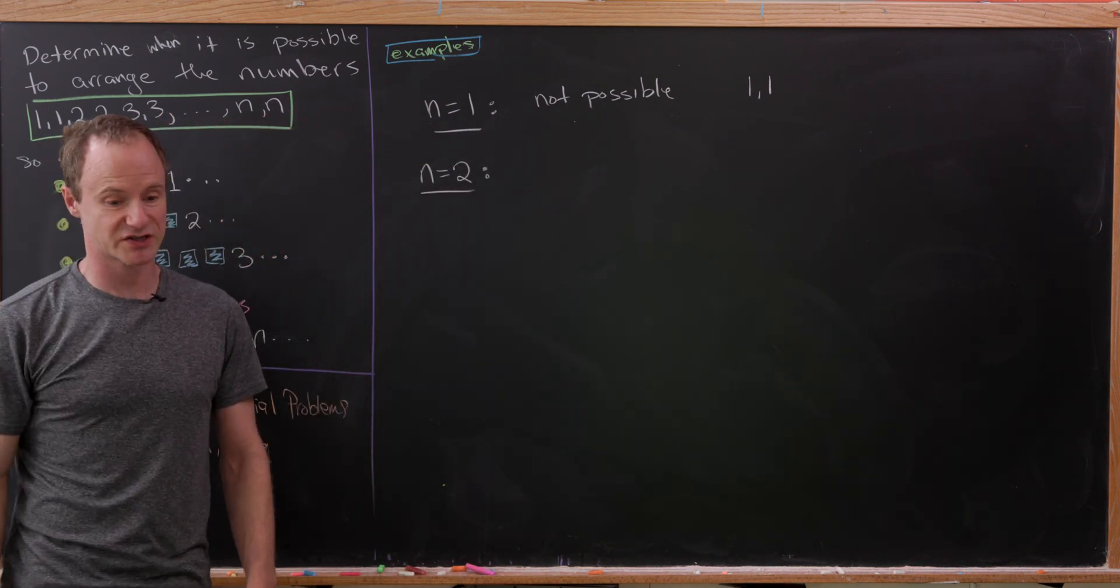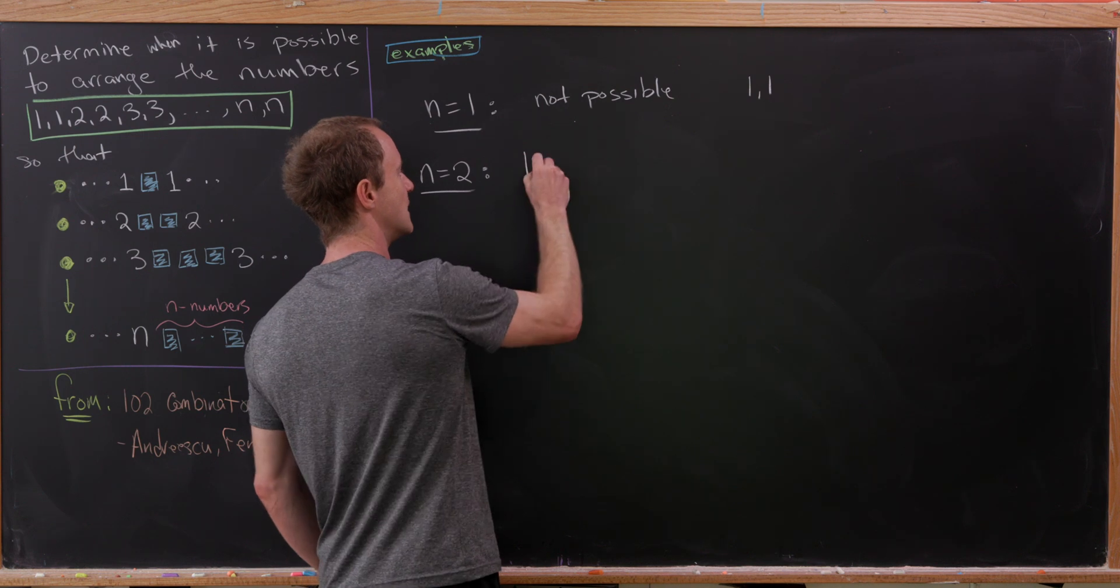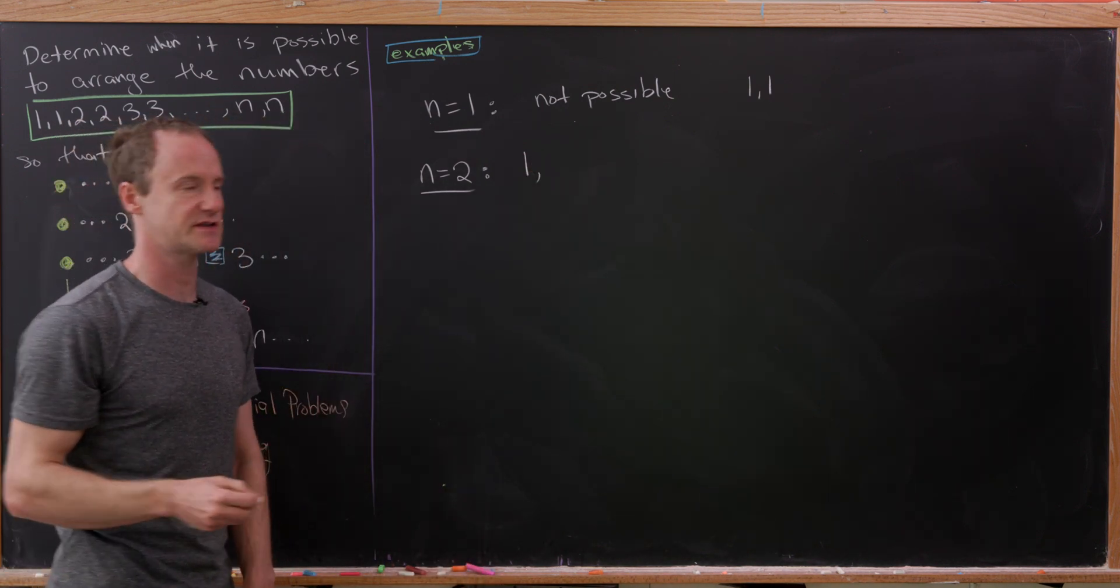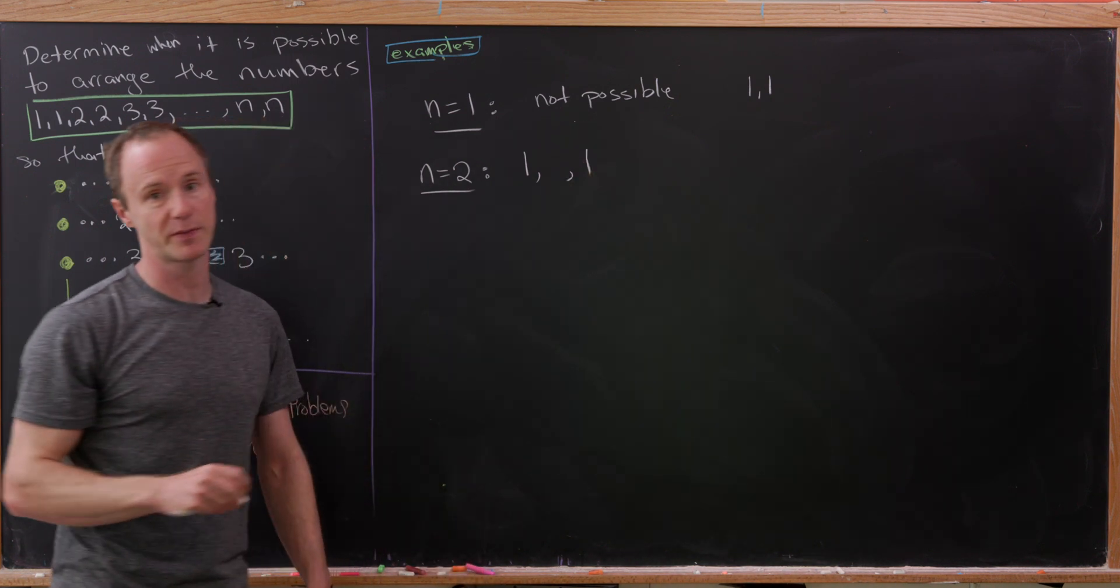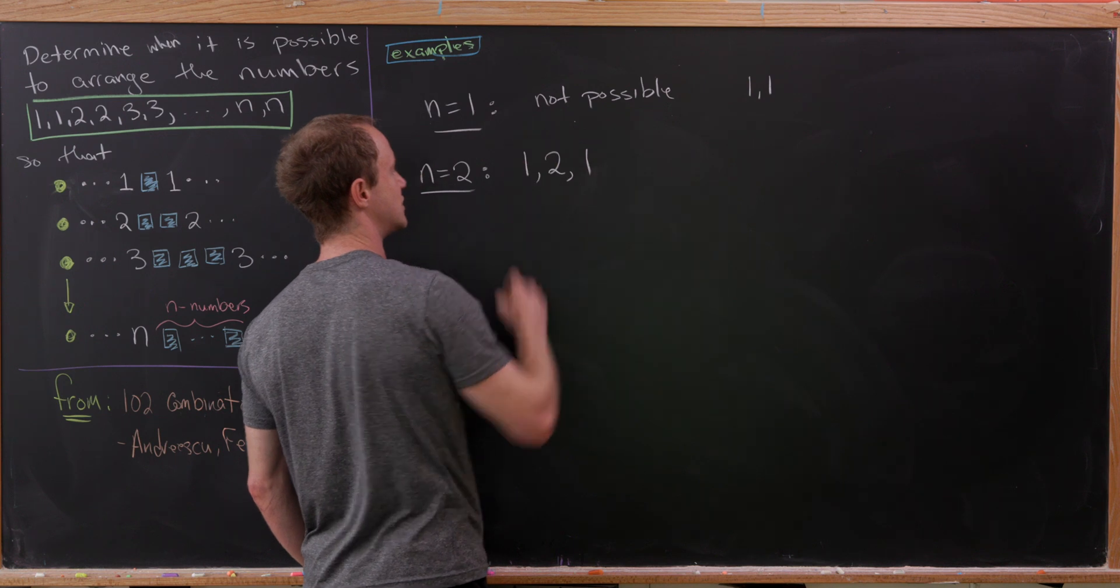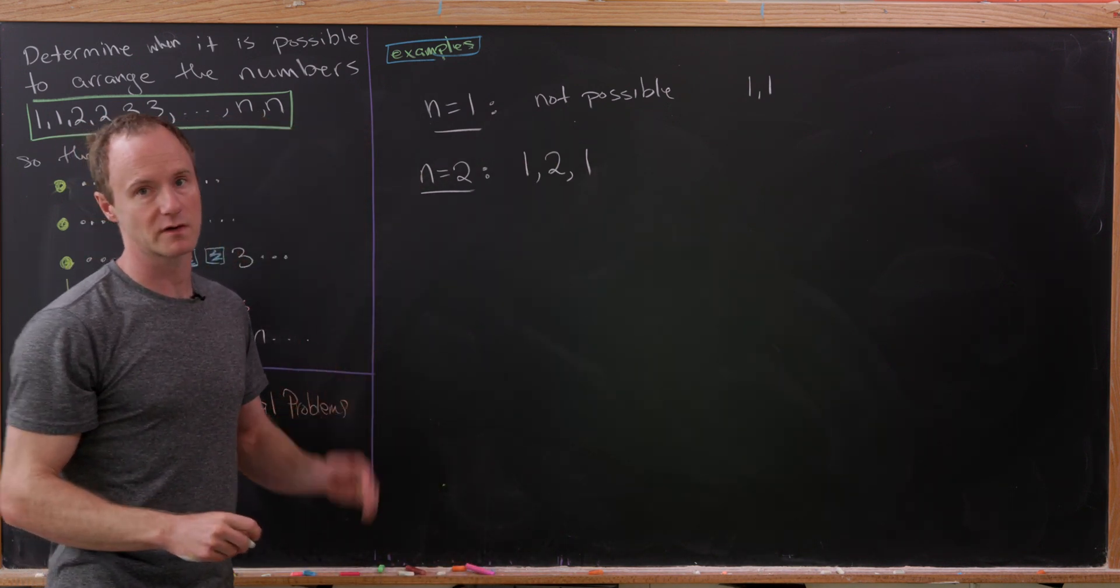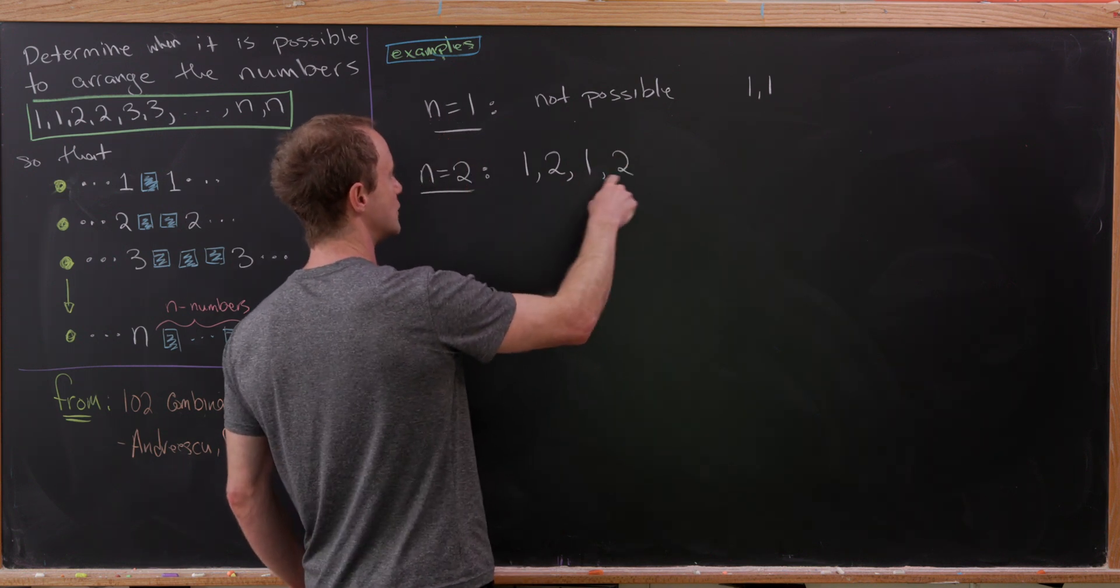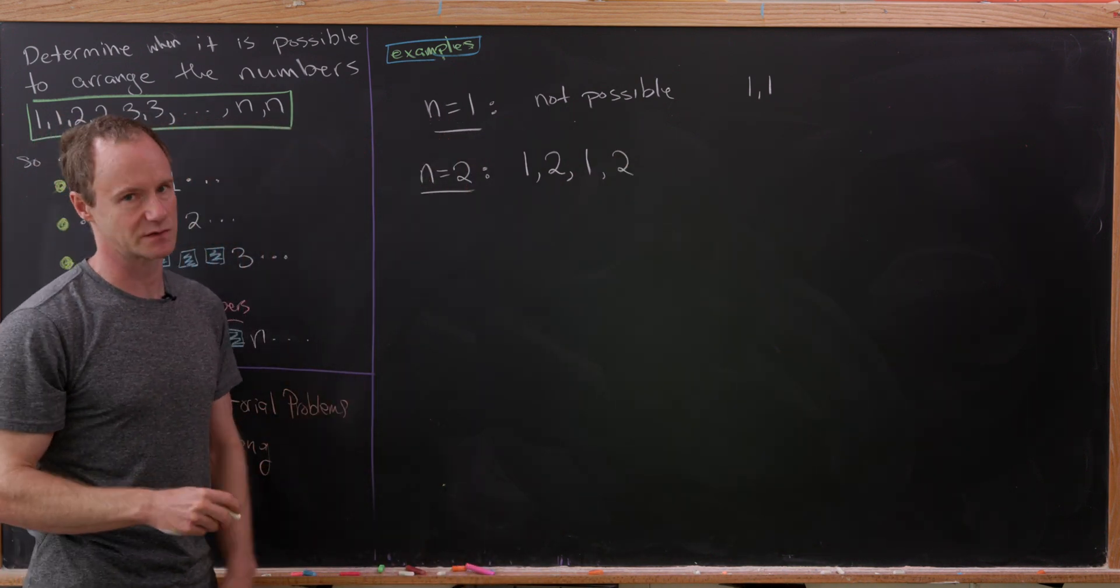Let's look at N equals 2. We could start with the number 1, but then since we need a single number between the two appearances of 1, we've got to put something between them. Since N is 2, the only thing we can put is 2. But now we've got only one number left to write down, and that's the number 2. But between the two appearances of 2, there's only one number. So that doesn't work.